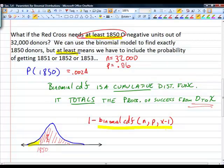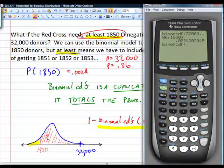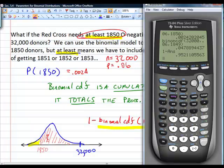On our calculator, we would take the binomial CDF for 32,000 trials, 6% chance of having O negative blood, and I want to find the total probabilities up until the 1,849th person because this CDF includes this person right here, and I don't want that person in my 'at least 1,850.' So I get a total number for this, and then I subtract that number from 1. 1 minus this number gives me the probability of having at least 1,850 people that are O negative blood donors out of my 32,000.